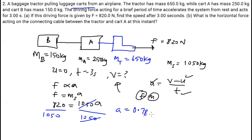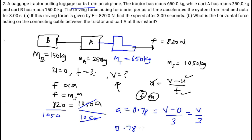If acceleration is 0.78 and acceleration equals change in velocity over time, with initial velocity 0 and time 30 seconds, then 0.78 equals V over 30. Cross-multiplying, V equals 3 times 0.78, which is 2.34 meter per second. That is the final velocity.